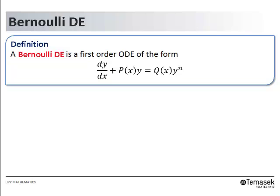A Bernoulli DE is a first-order ODE of the form dy/dx plus P(x) times y equals Q(x) times y to the power n.